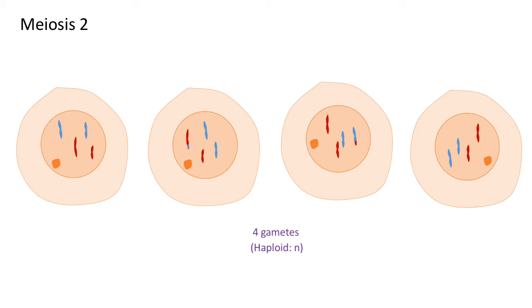These are haploid, so they have one set of chromosomes each. In our example, they have four chromosomes each.